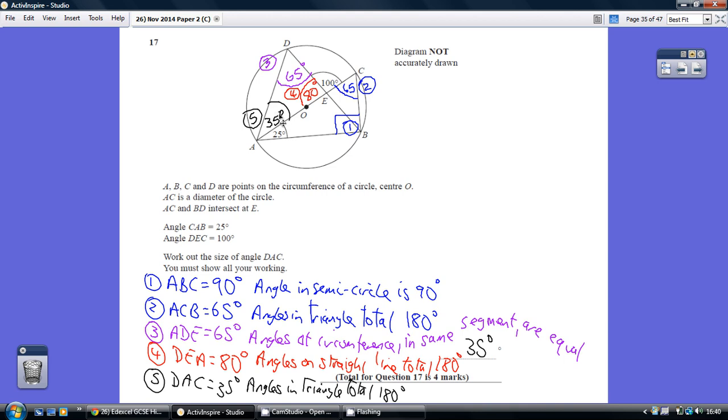Angles in a triangle add up to 180, so 180 take away 65, take away 80, gives us our final answer of 35.